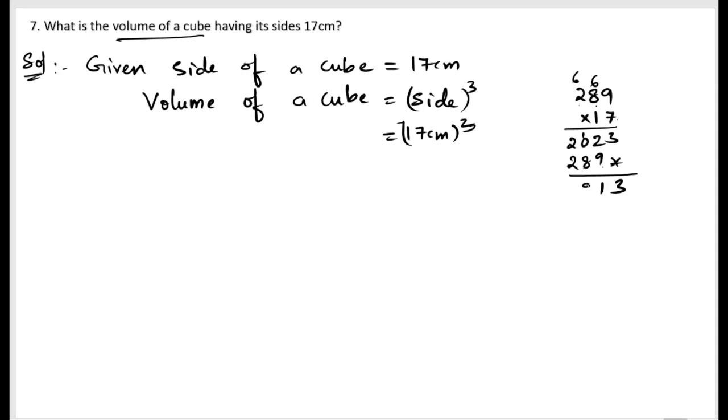8 plus 1 is 9, 2 plus 2 is 4, so 4913. So we got 4913 cubic centimeter. So finally we can write, hence the volume of a cube is 4913 cubic centimeter.